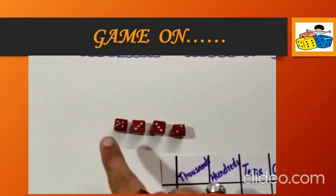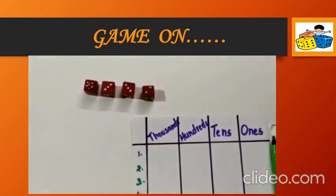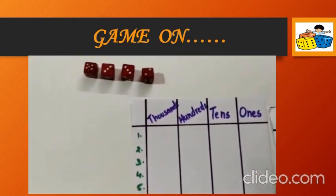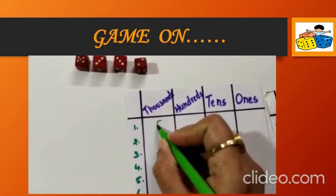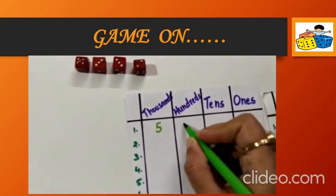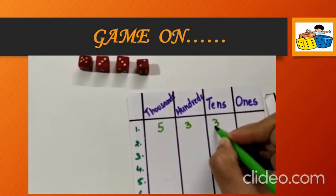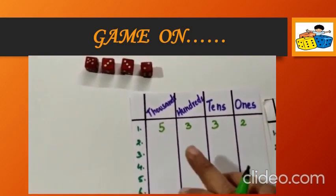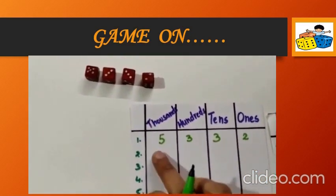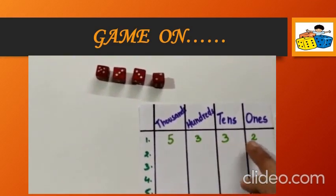Now, write down these numbers in your place value chart that you have made. We will write it down like this: five, three, three, two. So, what is the number that is being formed here? We have got 5,332.